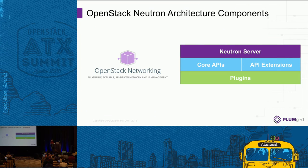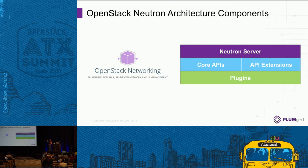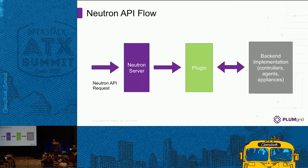When you interact with OpenStack, you're going to interact through the OpenStack dashboard as well as through the OpenStack API. You're going to hit the Neutron server, and Neutron is really a thin layer. Those API calls are then going to go to the Neutron plugin that you're leveraging. In this specific lab, you're going to be using the PlumGrid plugin. The API call will be sent from the OpenStack layer all the way to the backend component, which will be responsible for actually creating all the networking functionality you demand through the API layer.